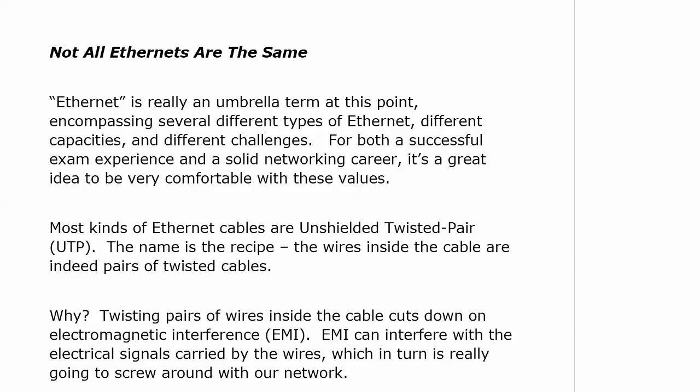For both a successful exam experience and a solid networking career, we need to be comfortable with these values. Most kinds of Ethernet cables are unshielded twisted pair, UTP. And the name is indeed the recipe, because the wires inside the cable itself are pairs of twisted cables. It's not just one wire going across — that's all we see because you see the outside of the cable when you pick one up. When you're using UTP, they're actually twisted pairs. Now the first question would be, why do we do that? But the answer is already on the board: twisted pairs of wires inside the cable really cuts down on electromagnetic interference, EMI.